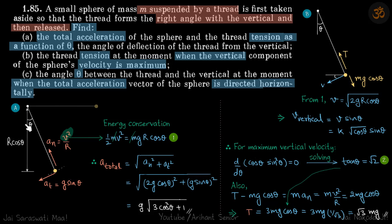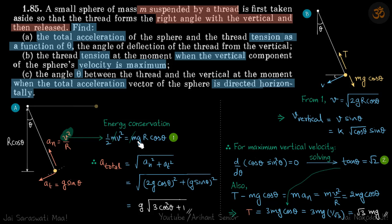For the first part — total acceleration and tension as a function of theta — where theta is given with the vertical. By energy conservation, the ball has fallen a distance of r·cosθ, so: ½mv² = mgr·cosθ. The centripetal acceleration aₙ = v²/r = 2g·cosθ, and the tangential acceleration aₜ = g·sinθ. Total acceleration = √(aₙ² + aₜ²), and since aₙ = 2g·cosθ, we get the total acceleration as √(4g²cos²θ + g²sin²θ).